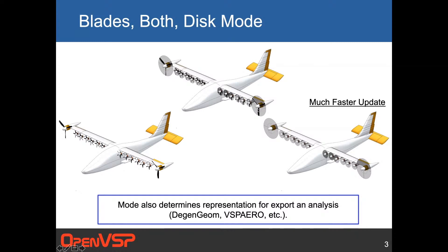In both mode, we draw both the disc and the blades. If you use disc-only mode, your updates and refreshes are going to be much, much faster. I certainly recommend that if you have a complex combination of rotors and non-rotors, you'll probably want to leave it in disc mode most of the time and only switch to blade when you need that. This representation mode also determines what goes to any sort of analysis or export. If only blades are being shown, the disc will not be exported. If in actuator disc mode only, the blades will not go to the geometry or CAD file. In both mode, both go to whatever analysis or export file — what you see on screen is what you get.